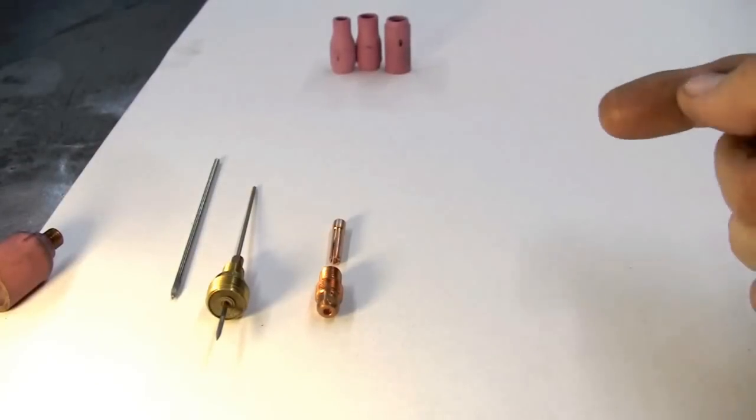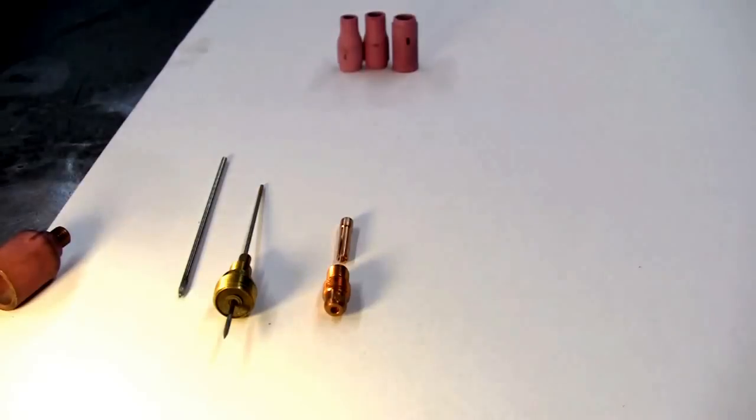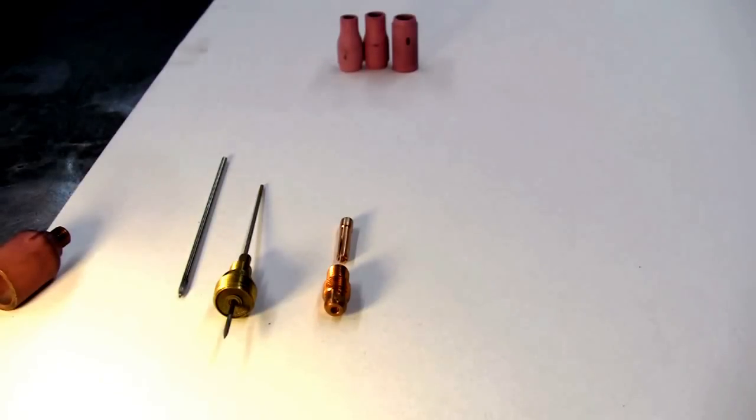Now we'll touch on the collet bodies and the collet. These are matched to the size tungsten that you're going to use. So if you're using a 1/16th tungsten, you're going to use a 1/16th collet body and a 1/16th collet to hold it down in the torch.